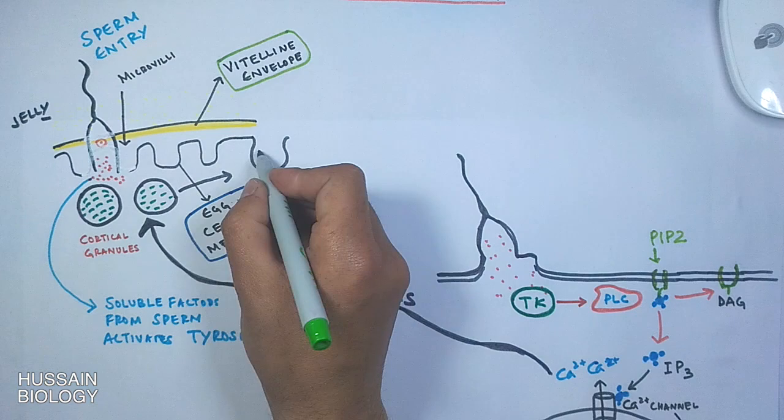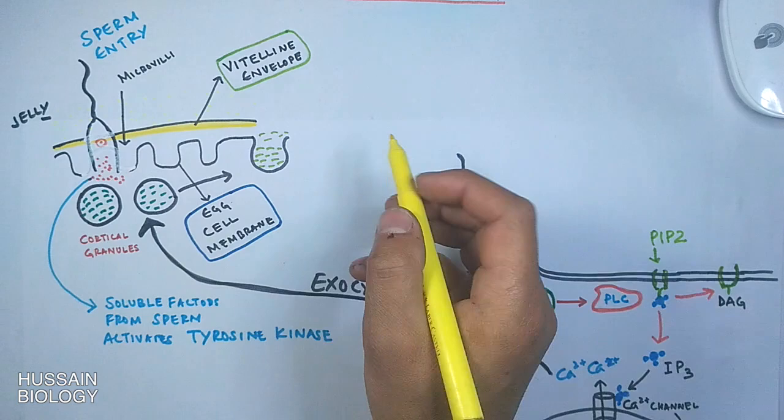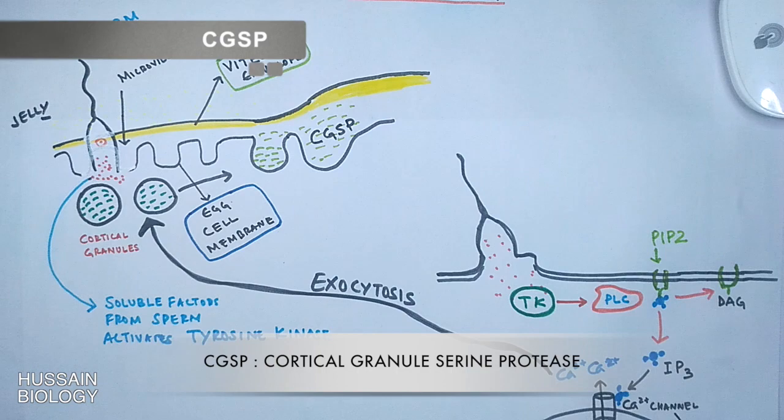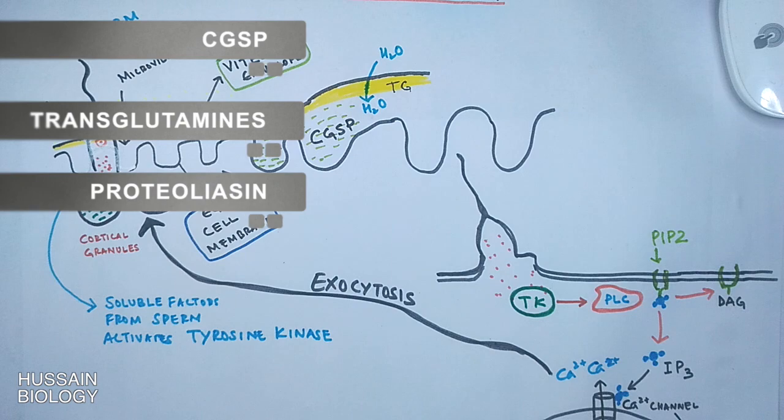Upon exocytosis, the cortical granules release many types of proteins and enzymes which help in making the fertilization envelope and hyaline membrane. They release CGSP, an enzyme that cleaves the proteins linking the vitelline envelope to the cell membrane. They also release transglutaminase, ovoperoxidase, and many other proteins.